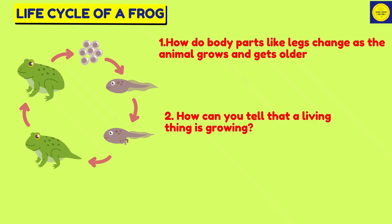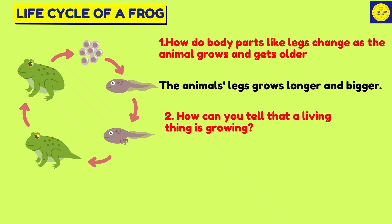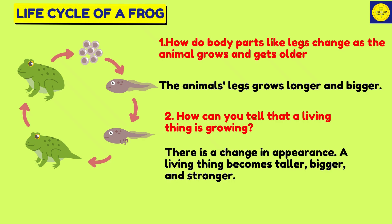Here is a picture about the life cycle of a frog. Question 1: How do body parts like legs change as the animal grows and gets older? Answer: the animal's legs grow longer and bigger. Question 2: How can you tell that a living thing is growing? Answer: there is a change in appearance — a living thing becomes taller, bigger, and stronger.